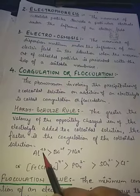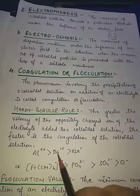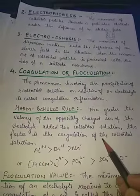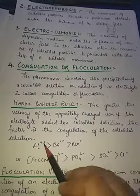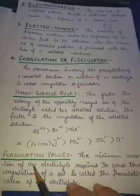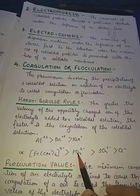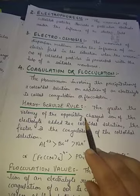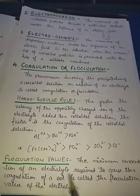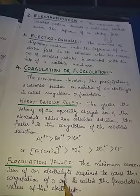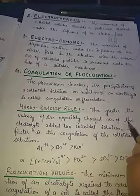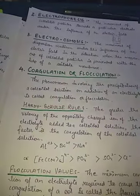A common exam question is to arrange ions according to the Hardy-Schultz rule, or to explain it with an example. This applies for both positively and negatively charged colloids. The flocculation value is the minimum concentration of an electrolyte required to cause coagulation of a sol — the minimum amount of oppositely charged electrolyte needed to coagulate the colloidal sol.